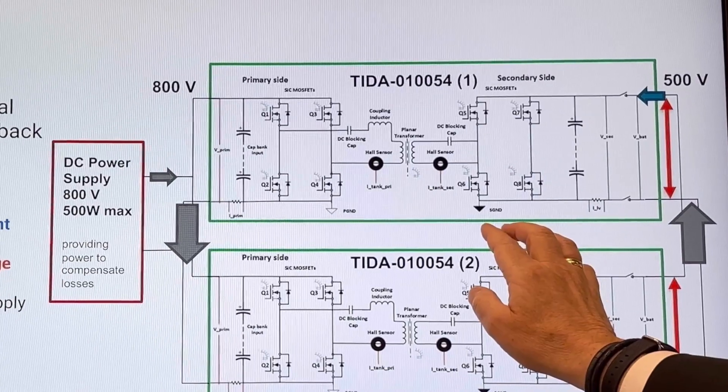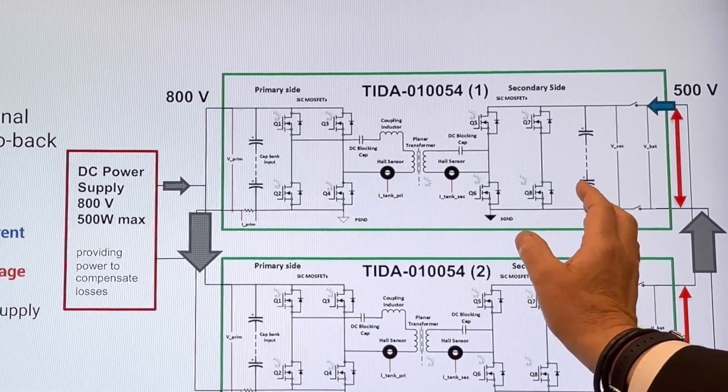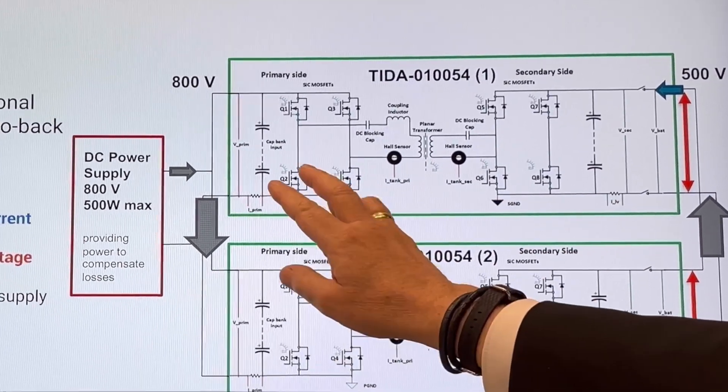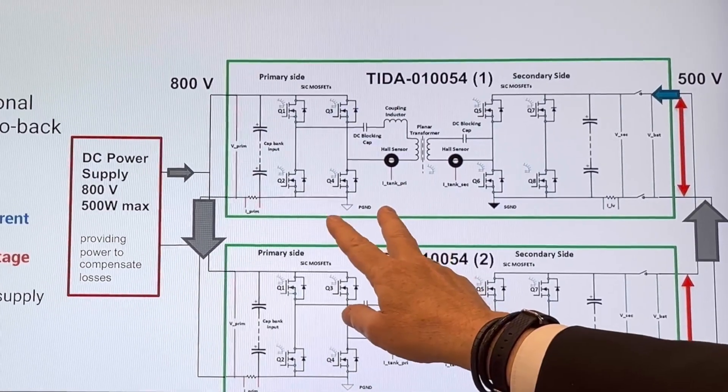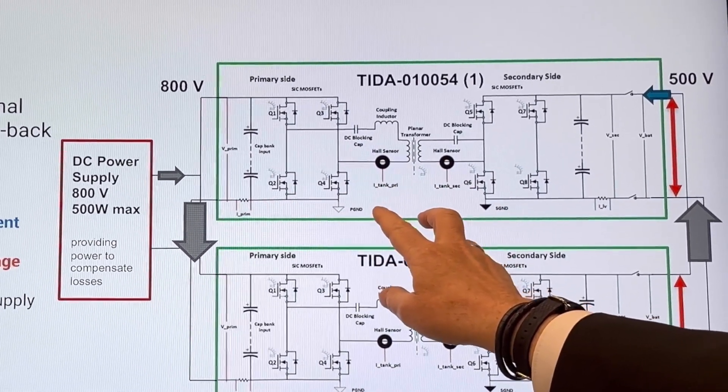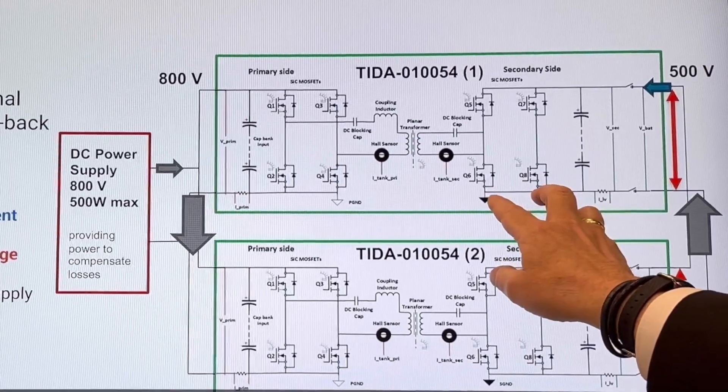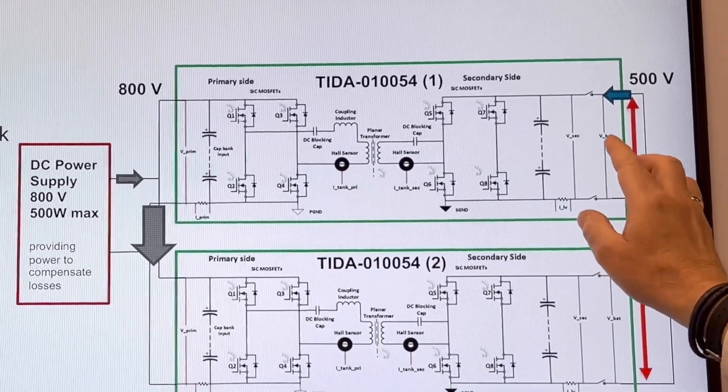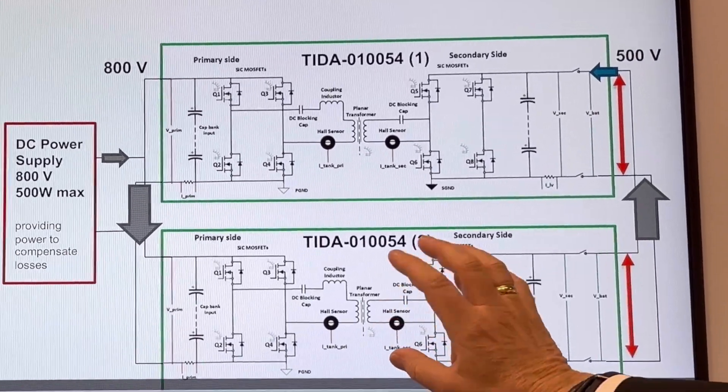The output side is again a full bridge. In this case it is 650 volt rated silicon carbide MOSFETs. And we basically operate from the 800 volt, generating AC signal across the transformer at 100 kilohertz, being rectified on the secondary side to 500 volt for the battery in the car.